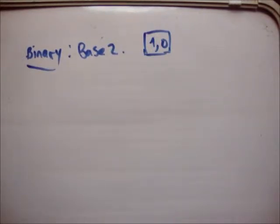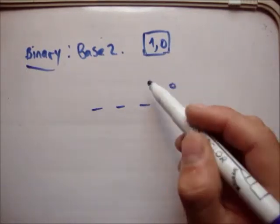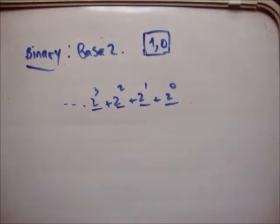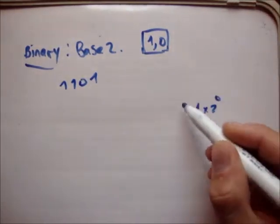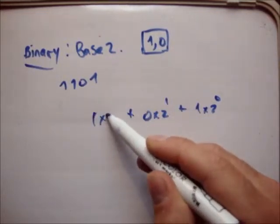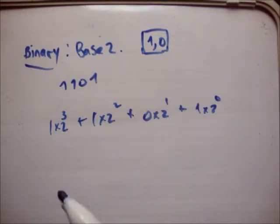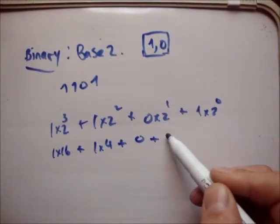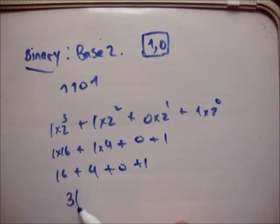Binary operates the same way as the other systems. Each position of a binary number is something times 2 to the 0, plus something times 2 to the 1, plus something times 2 to the 2, plus something times 2 to the 3, and so on. For example, the binary number 1101 equals: 1 times 1, plus 0 times 2, plus 1 times 4, plus 1 times 8 — that is 1 plus 0 plus 4 plus 8, which gives 13 in base 10. So 13 in base 10 is equivalent to 1101 in base 2.